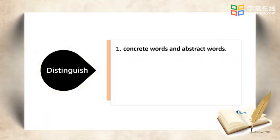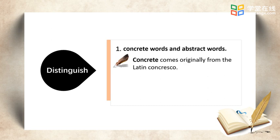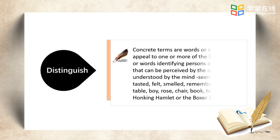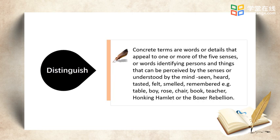Now let's distinguish concrete words and abstract words. Concrete comes originally from the Latin concretio — corn means together, referring to a physical process like concrete hardening. Often, concrete terms are words or details that appeal to one or more of the five senses, or words identifying persons and things that can be perceived by the senses or understood by the mind: seen, heard, tasted, felt, smelled, remembered.